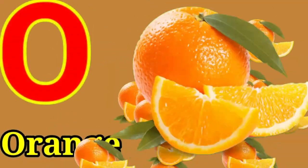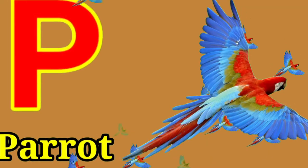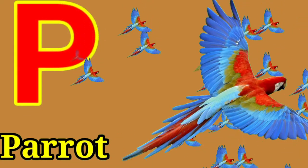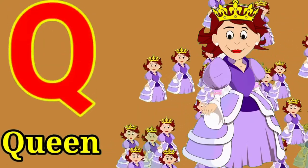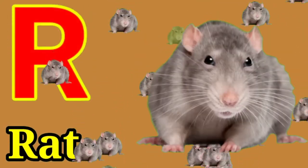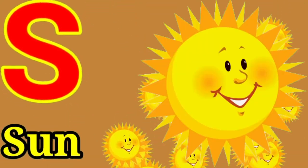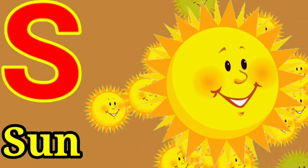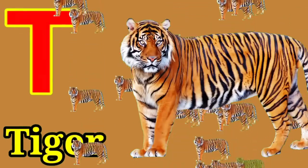N for nest, O for orange, P for parrot, Q for queen, R for rat, S for sun.